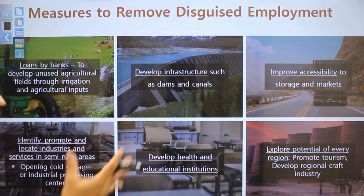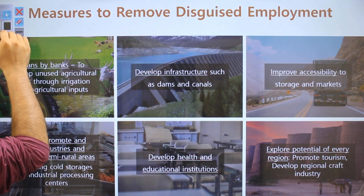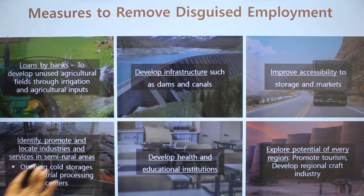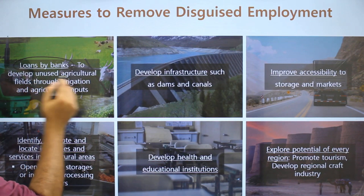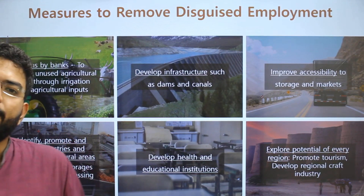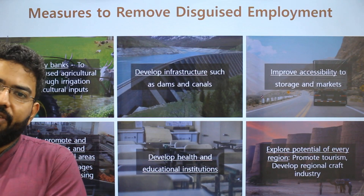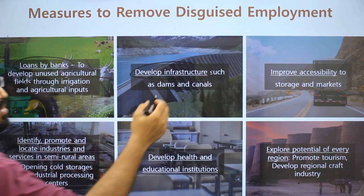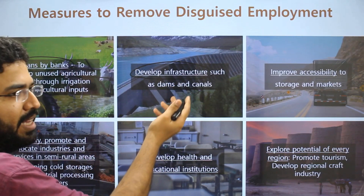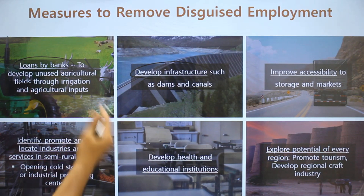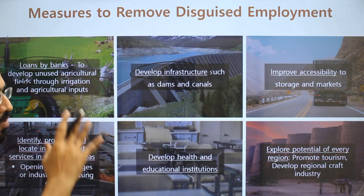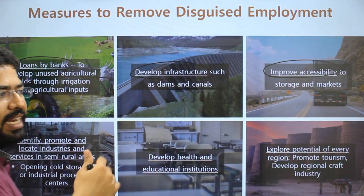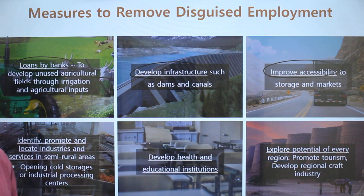There are various ways to solve this problem. Banks can provide loans and credit to farmers, enabling use of unused agricultural fields so that displaced workers can move to new fields and production can grow. We can also develop infrastructure like dams and canals, which provides employment during construction and brings prosperity to the region, creating new avenues for employment.